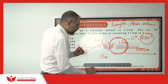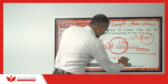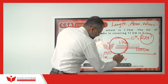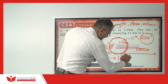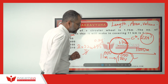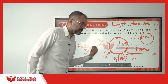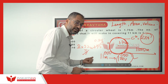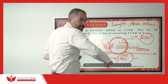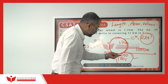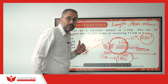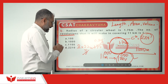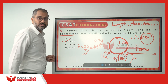In one revolution, if it covers 11 meters, to cover 11,000 meters it takes 1,000 revolutions. One revolution covers 11 meters, so if it revolves 1,000 times, 11,000 meters — which is 11 kilometers — can be completed. The answer is 1,000.